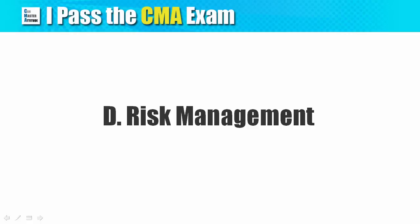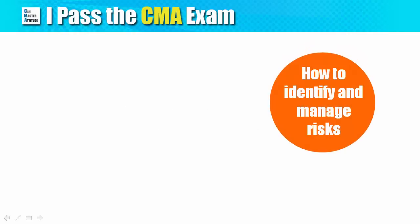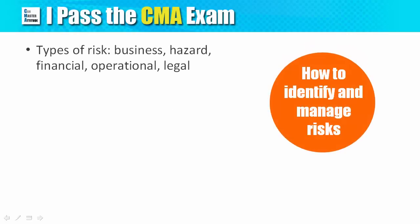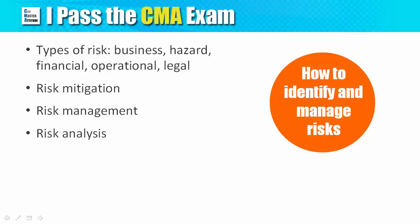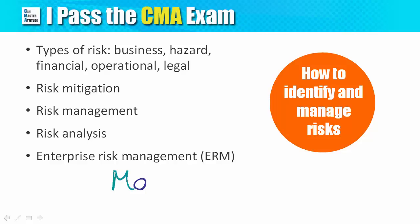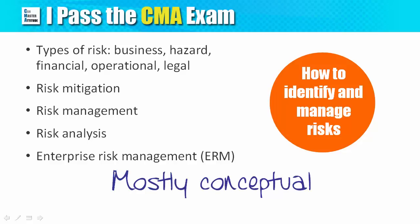Risk Management covers the types of risk, including business, hazard, financial, operational, and legal risks, as well as risk mitigation, risk management, risk analysis, and enterprise risk management, also known as ERM. Organizational managers need to identify, assess, and respond to risks in order for the organization to achieve its goals. In the CMA exam, we focus on the ERM model and you are most likely to get conceptual questions in this section.